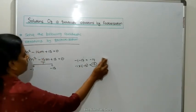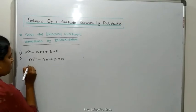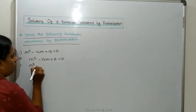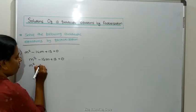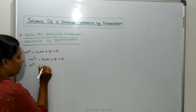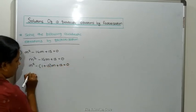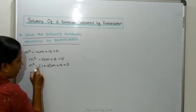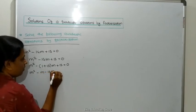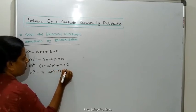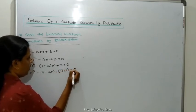How to write this one? M squared minus — instead of 14m we write 1 plus 13 into m — minus 1M minus 13M plus 13, and this 13 is written as 13 into 1, which is equal to 0.